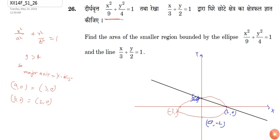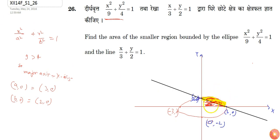We need to find out the area bounded by both the line and the ellipse. This is nothing but the whole area bounded by the ellipse in the positive xy region minus the area below the line.